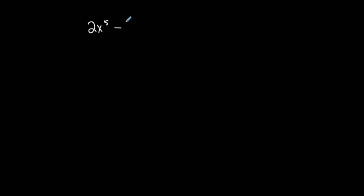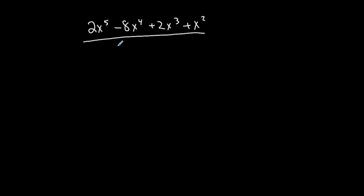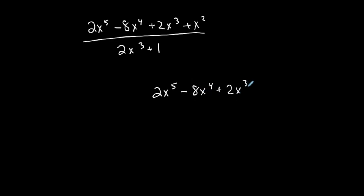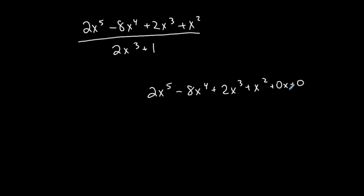Now let's do this one: (2x⁵ minus 8x⁴ plus 2x³ plus x²) divided by (2x³ plus 1). The fraction bar means the same as division. Setting this up: the numerator is 2x⁵ minus 8x⁴ plus 2x³ plus x². I notice I'm missing terms — I go from degree 5 to 4 to 3 to 2, but where's the degree 1 and the constant? So I need placeholders: 0x for the first-degree term and 0 for the constant.